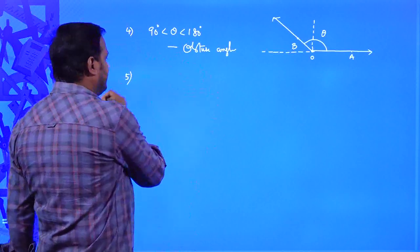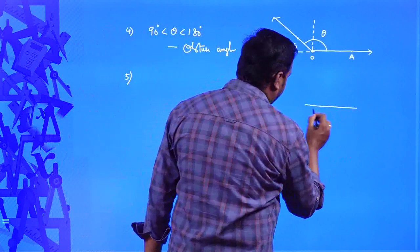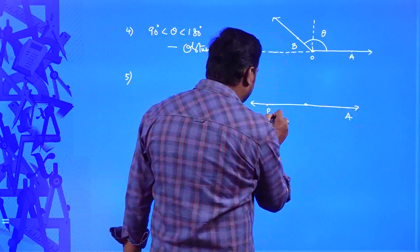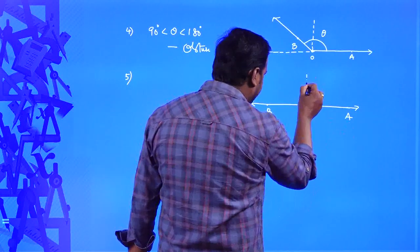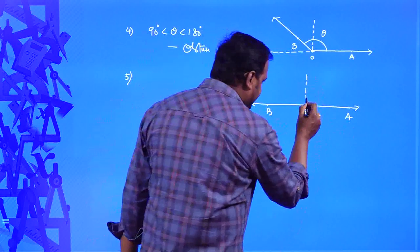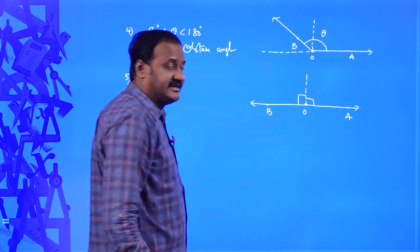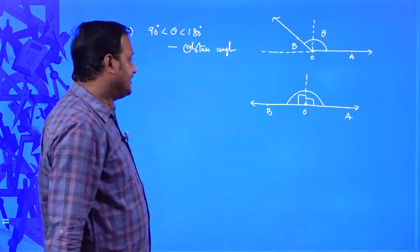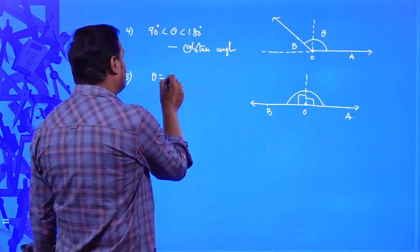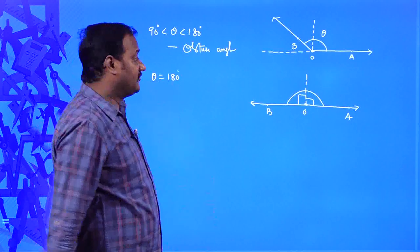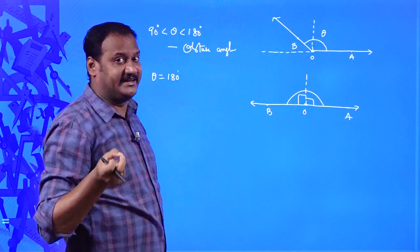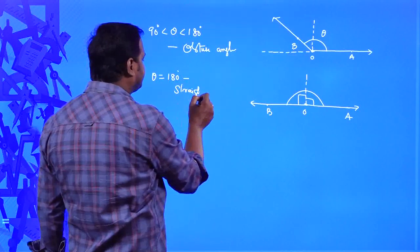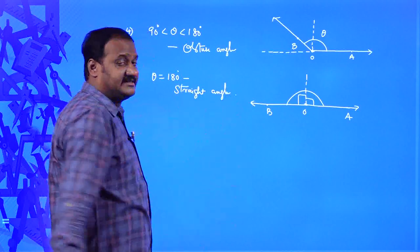Next, if ray OA and ray OB form an angle equal to 180 degrees — 90° + 90° = 180° — it looks like a straight line. That is why an angle of exactly 180 degrees is called a straight angle.